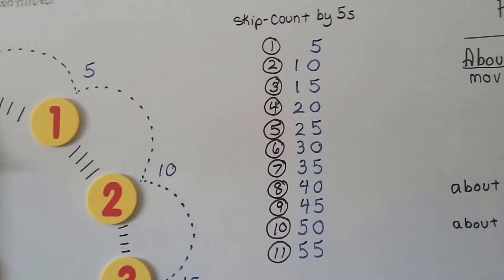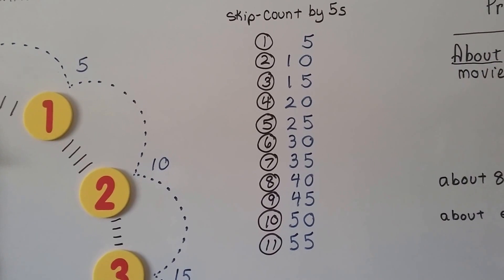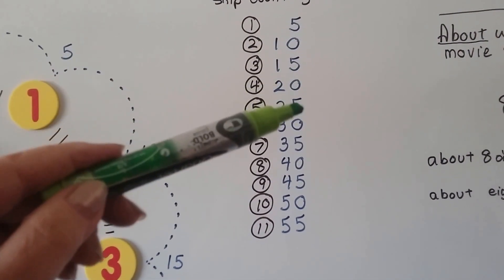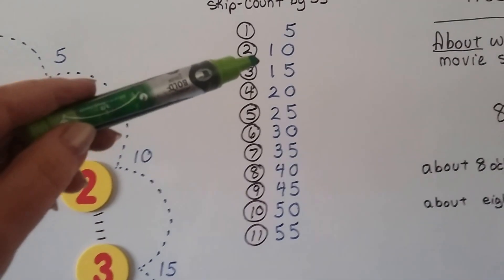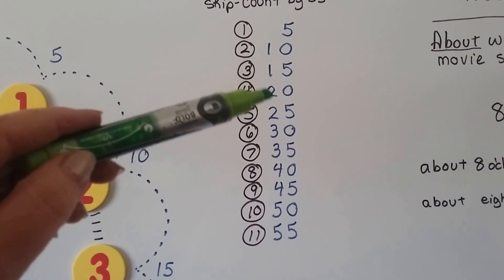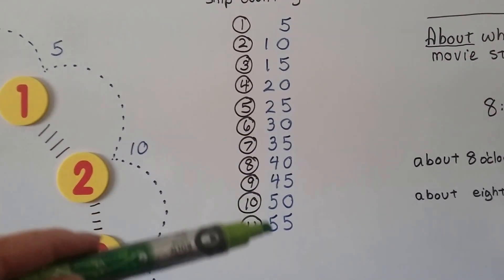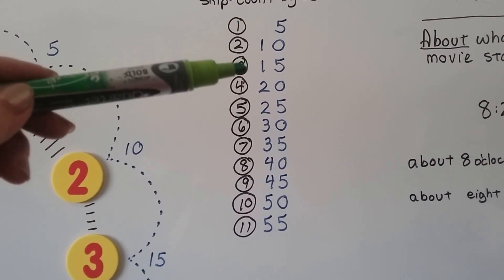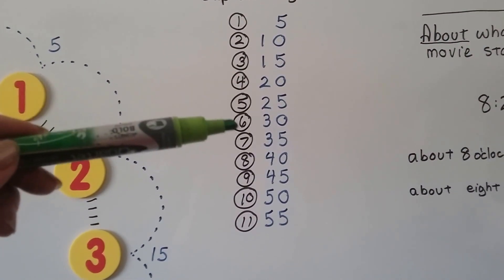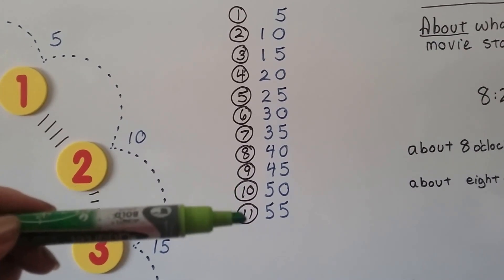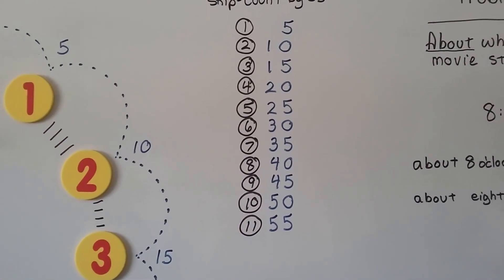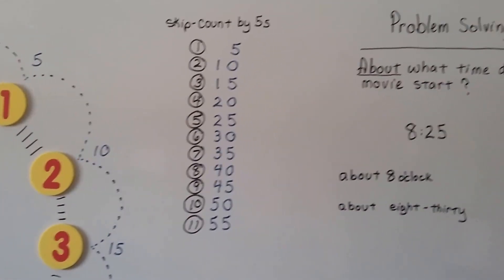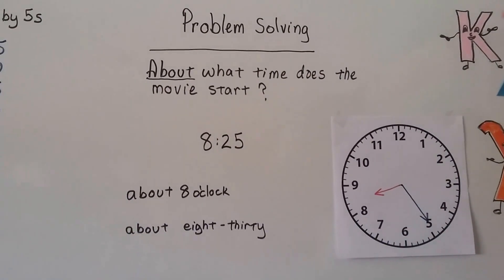Can you see the pattern for skip counting? Look at the ones place — it goes 5, 0, 5, 0, 5, 0. Look at the tens place — we have 1 and 1, 2 and 2, 3 and 3, 4 and 4, 5 and 5. So it's very easy to skip count by fives: 5, 10, 15, 20, 25, 30, 35, 40, 45, 50, 55. I bet you could skip count by fives!